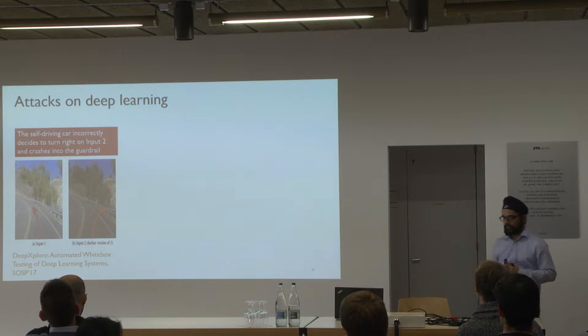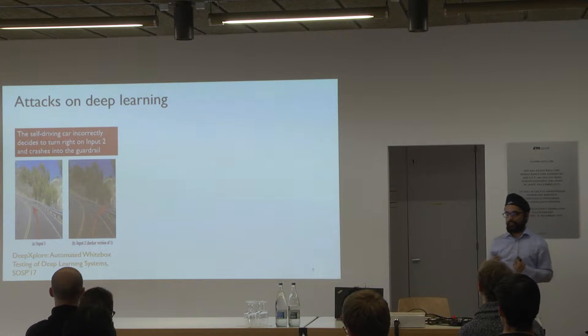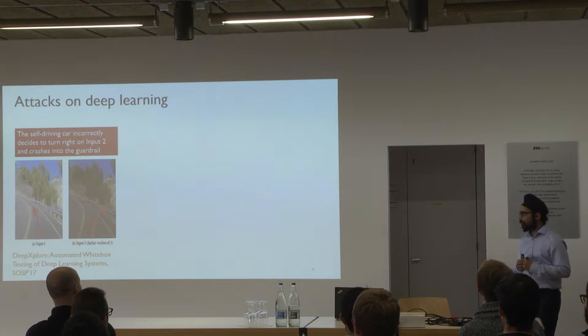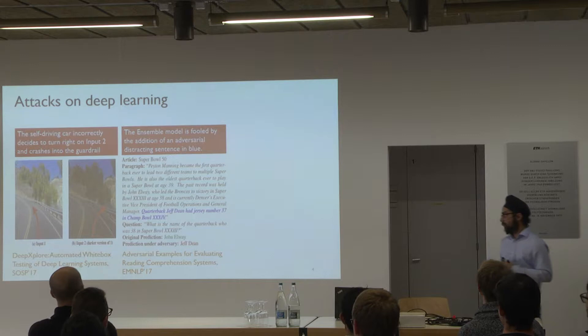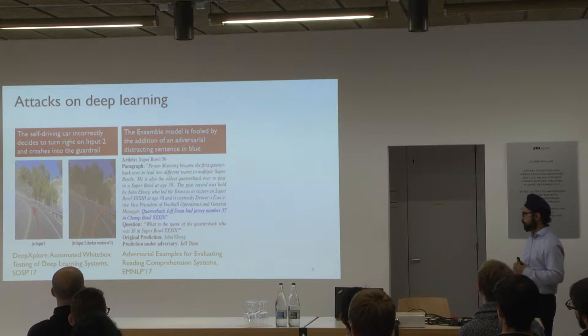The problem is that it has been shown that you can train a neural network to identify roads, and this network may work well on a bright day, but if it's cloudy, the neural network may decide it is a good idea for the car to jump off the guard rail. These kinds of attacks are not only limited to image recognition systems — you can also have adversarial examples for text classification systems.